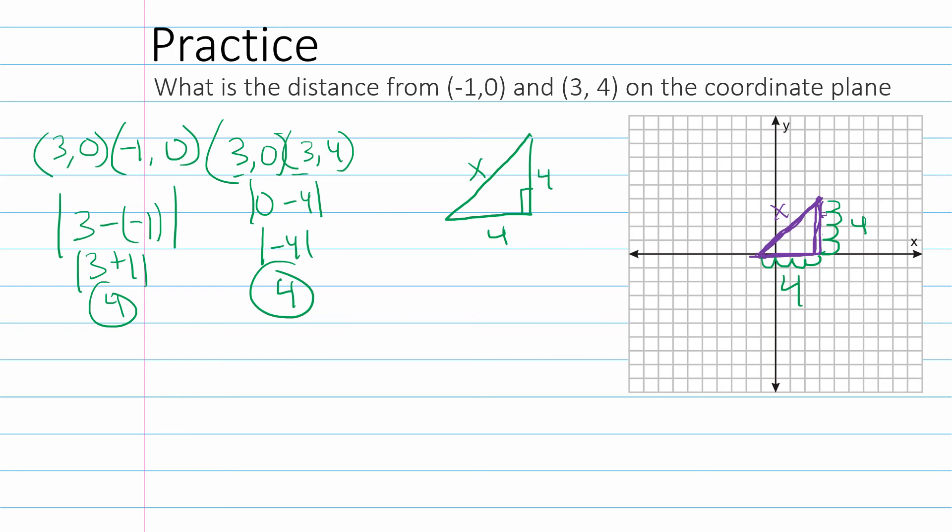And then let's find our Pythagorean theorem. A squared plus B squared equals C squared. 4 squared plus 4 squared equals C squared. 16 plus 16 equals C squared. 32 equals C squared. And then we're going to take the square root of both sides. And C equals, actually approximately, let me erase that. C is approximately 5.66. Alright, so I believe we've got one more.